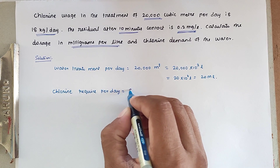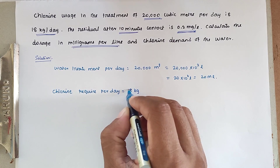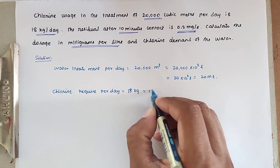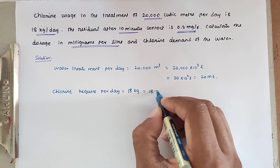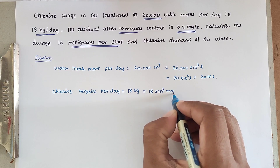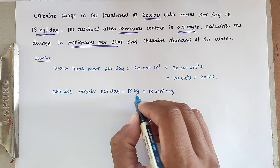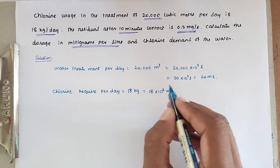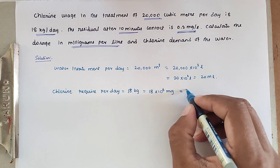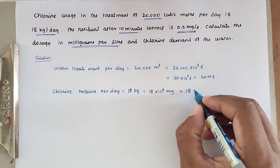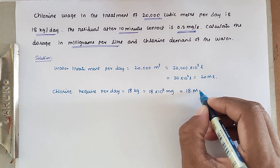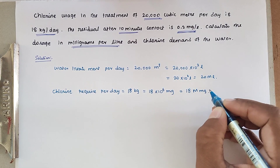Now the chlorine required per day is 18 kg. We convert this into milligrams: 18 into 10 to the power 6 milligrams — converting from kg to grams and then to milligrams. So now we have 18 million milligrams.